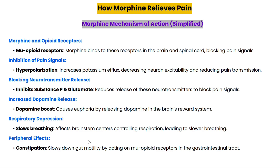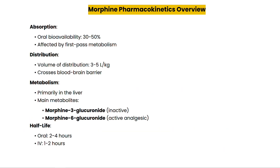Now let's dive into morphine pharmacokinetics, a vital aspect for understanding how this drug works within the body. Pharmacokinetics refers to the process of absorption, distribution, metabolism, and excretion of a drug. For morphine, several key factors come into play. Regarding absorption, when morphine is taken orally it is absorbed in the gastrointestinal tract; however, the bioavailability of oral morphine is only about 30 to 50 percent due to first-pass metabolism in the liver.